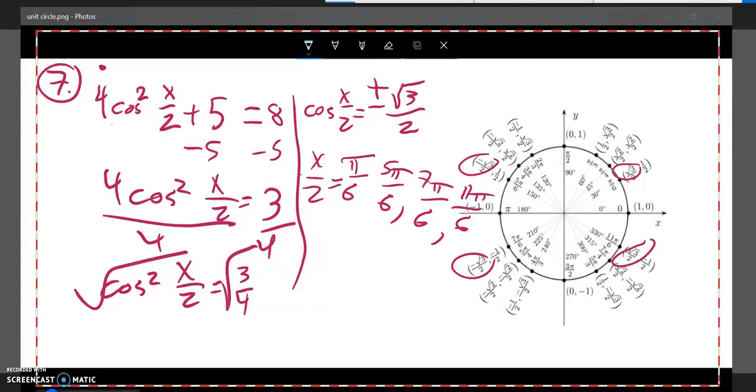I want to know x, not x over 2, so I'm going to multiply everything by 2. Doing that basically will divide out that denominator. So I've got pi over 3, 5 pi over 3, 7 pi over 3, 11 pi over 3.